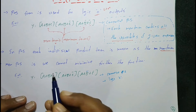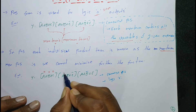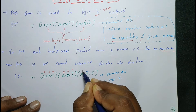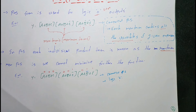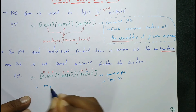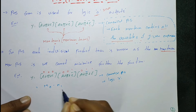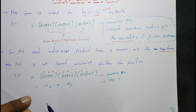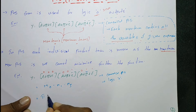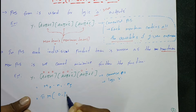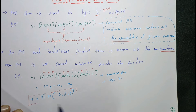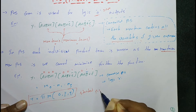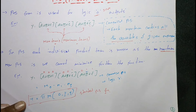In decimal number system, the binary combinations 0 0 0, 0 0 1, and 0 1 1 correspond to 0, 1, and 3 — these are logic 0 outputs. We represent this as the product of max terms M0 · M1 · M3, written as the product of max terms of 0, 1, 3. This is the standard POS form.